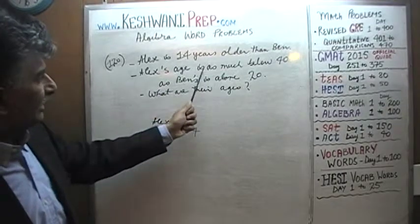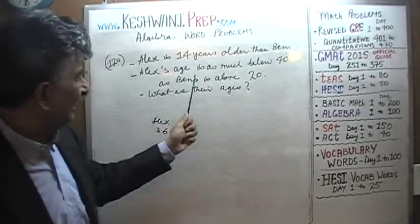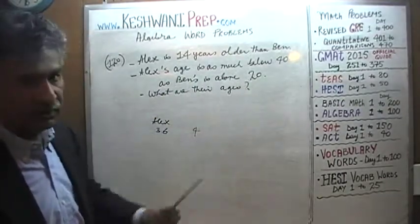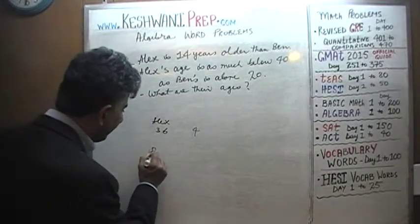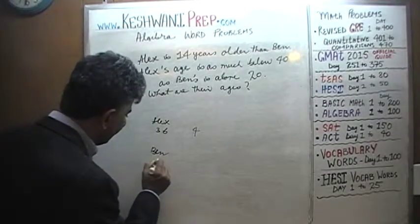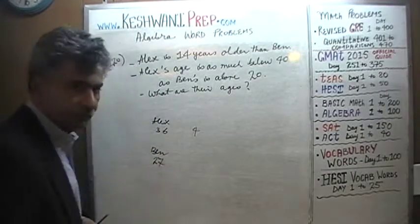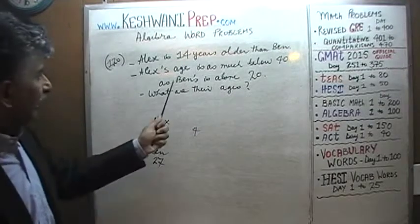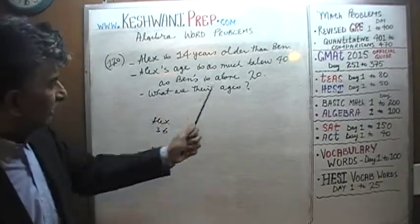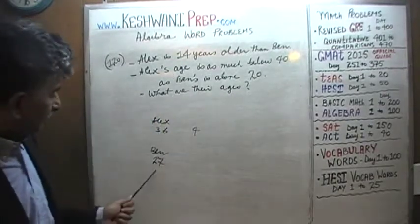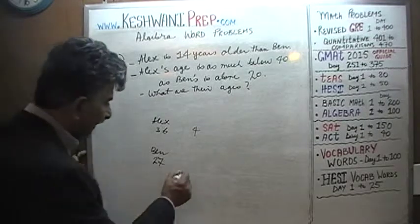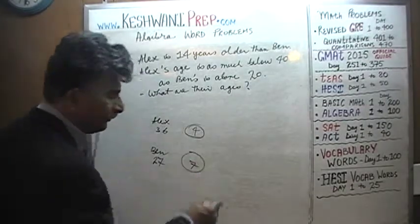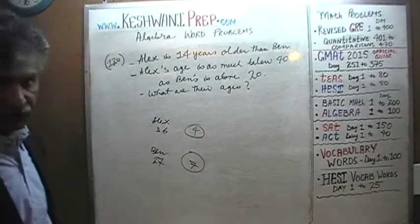Alex's age is as much below 40 as Ben's is above 20. Let's pretend Ben is 27. If Ben is 27, then Ben's age above 20 is 7. As you can see, they do not agree — these are not the correct ages.